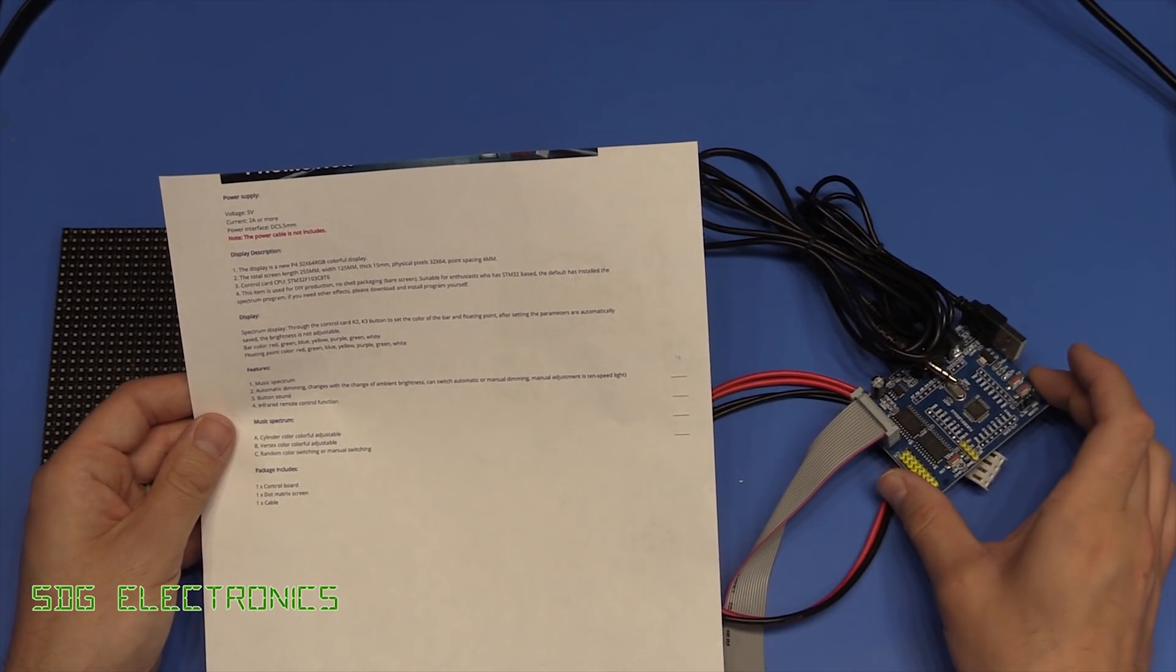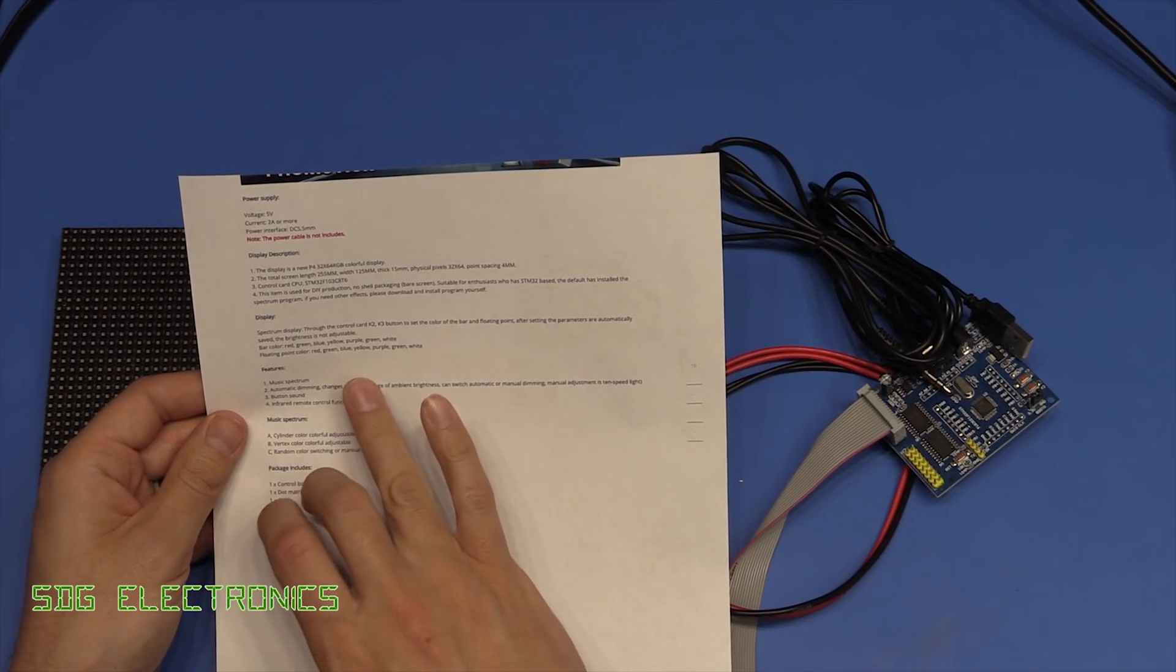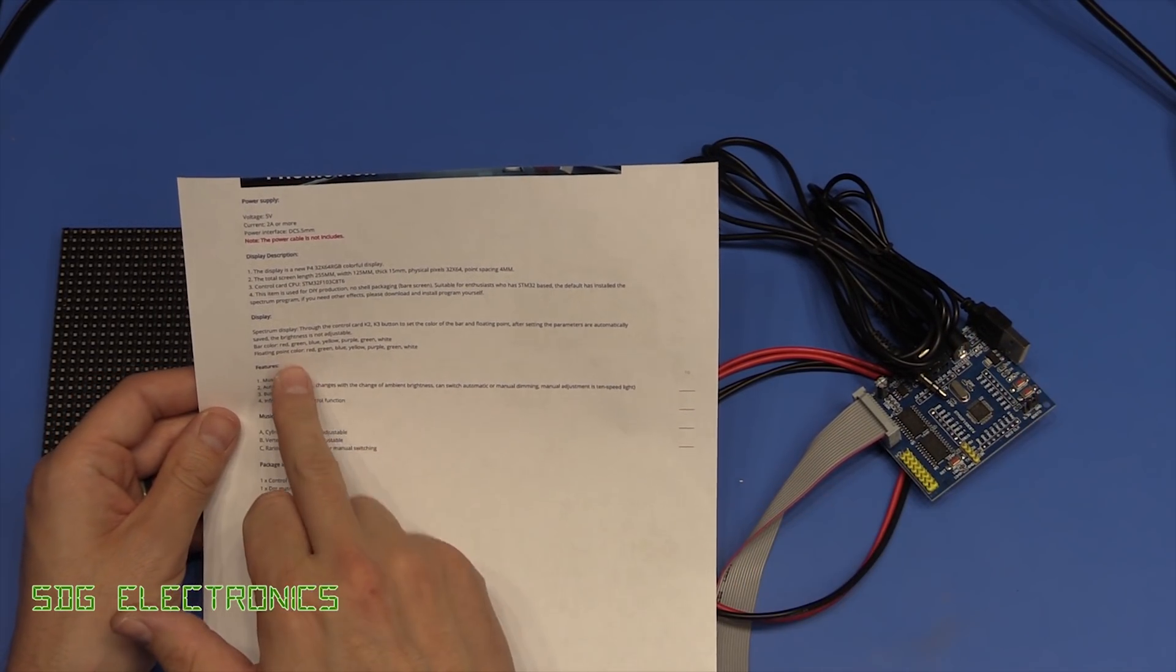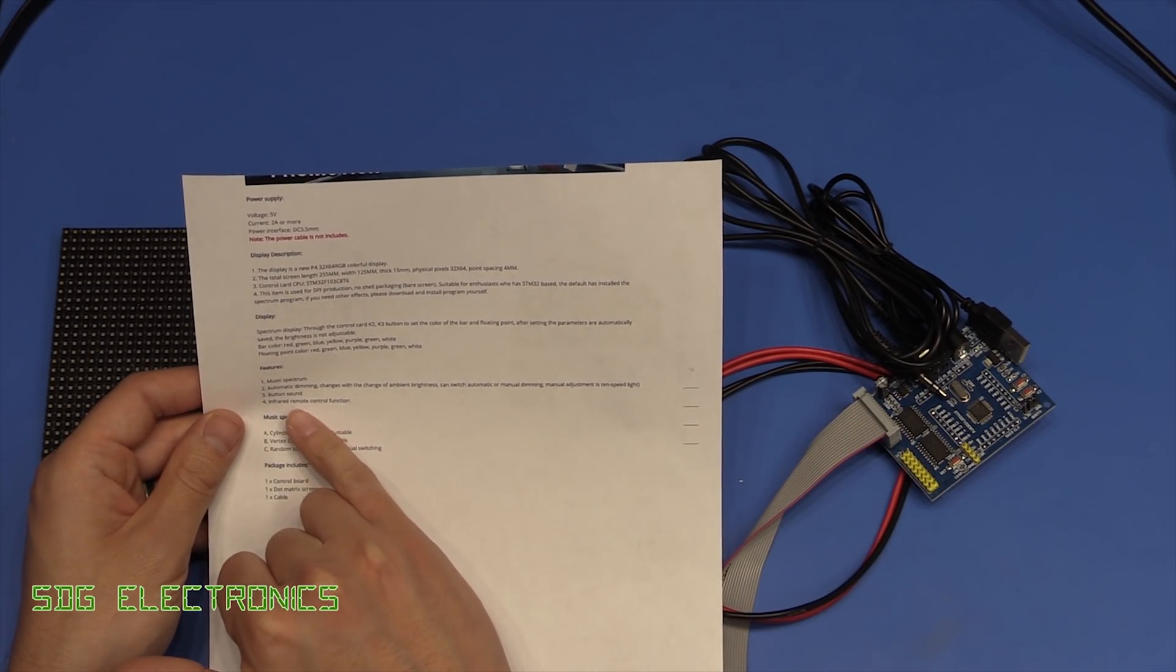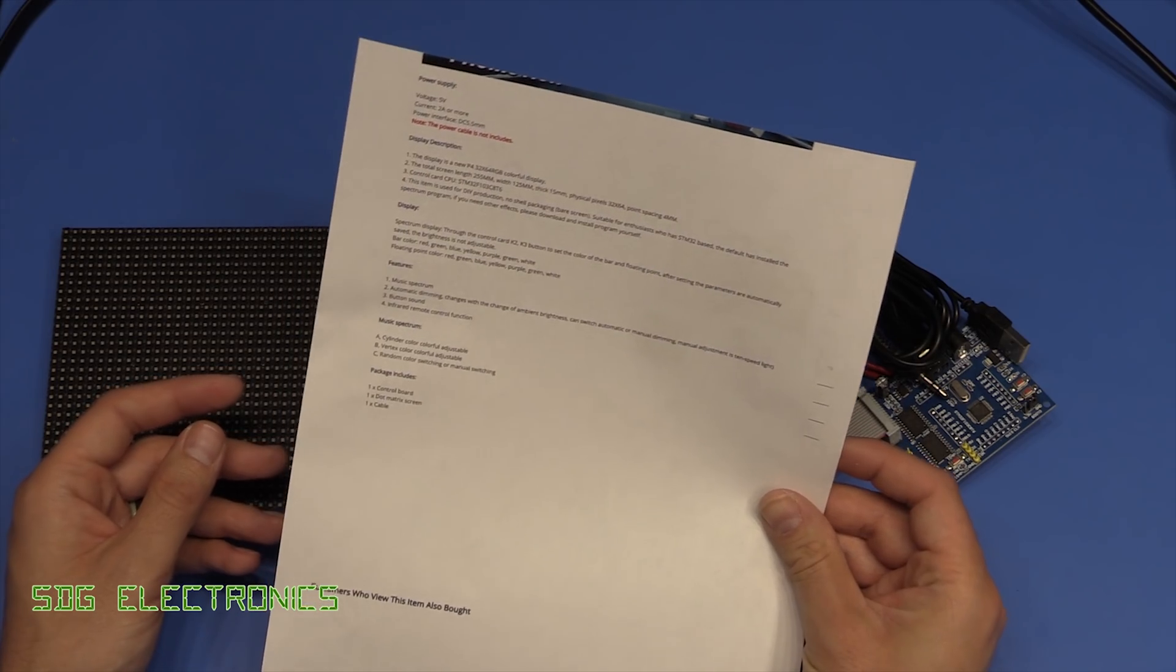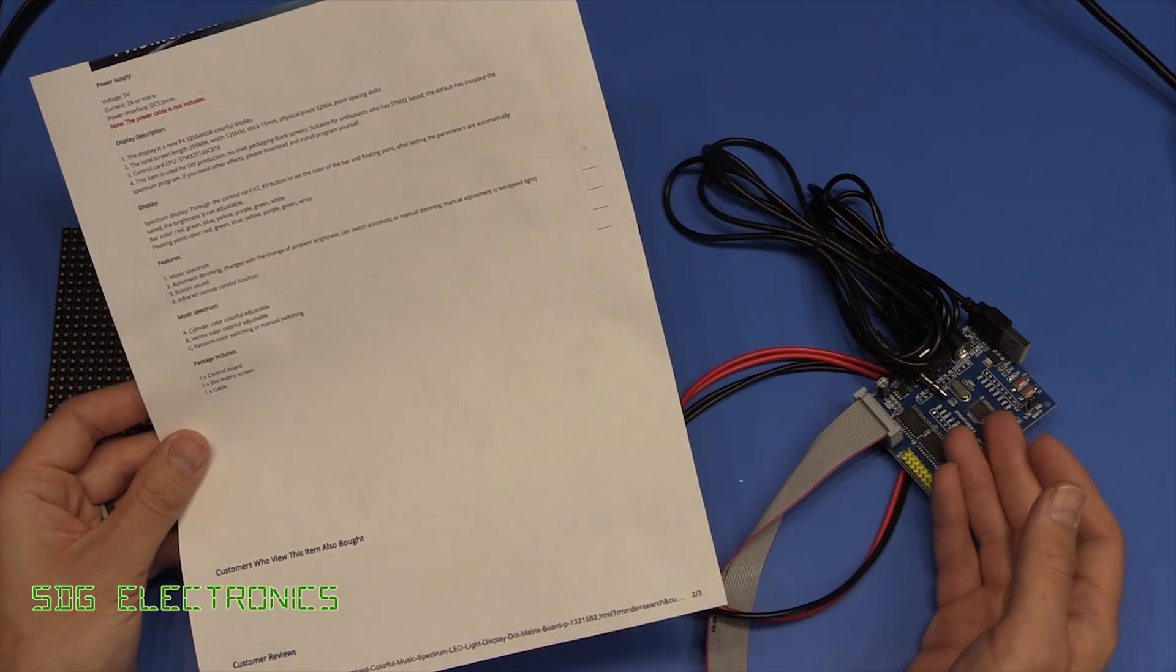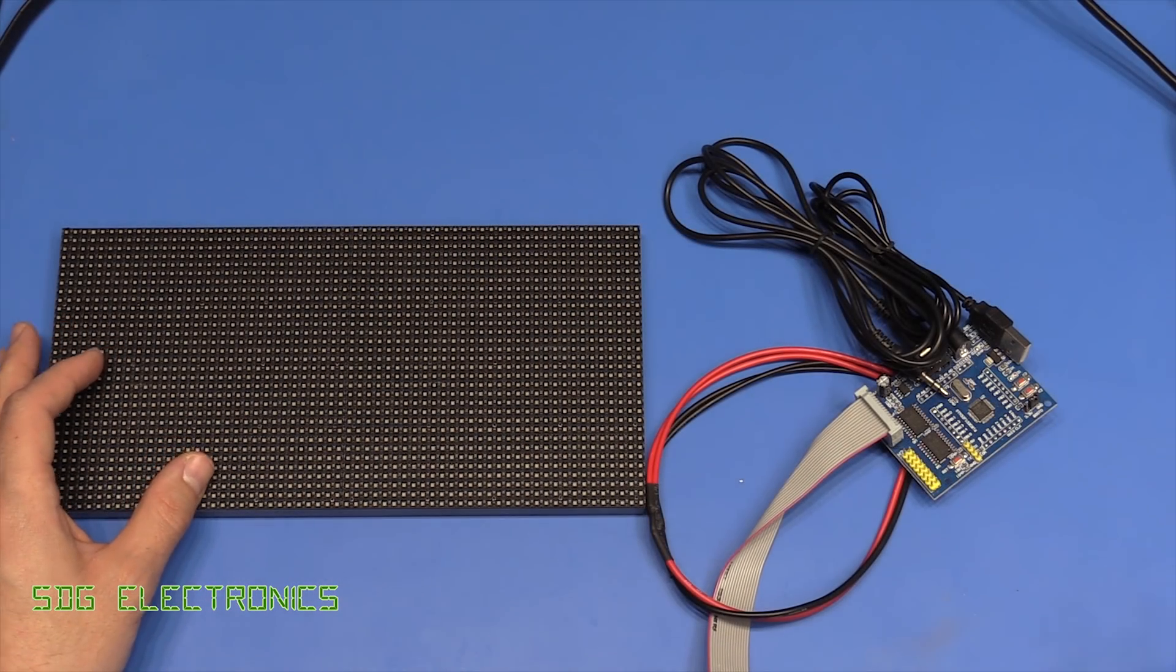It comes with this STM32 based little PCB and I think all that this in its current format does is it suggests that it is a spectrum analyzer. There's a few things about infrared remote controls but it didn't come with a remote control or anything else or in fact any documentation, so there's going to be a little bit of reverse engineering to do if we want to do anything with this other than what it does shipped from Banggood.